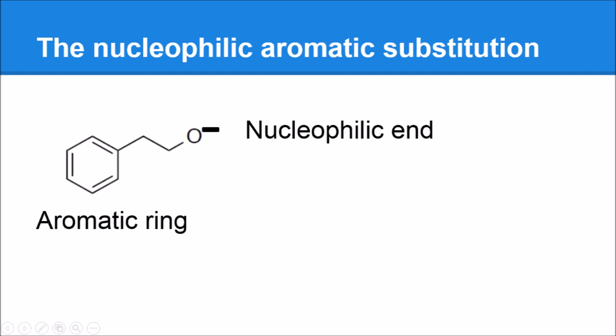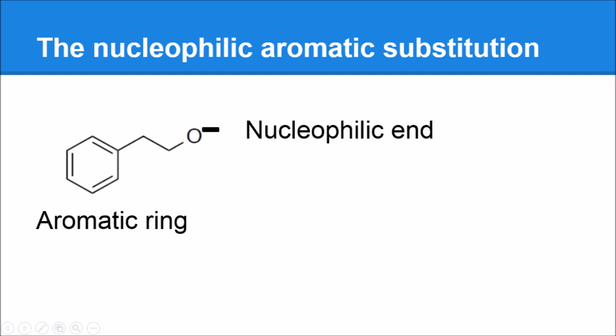At this point we have potassium K⁺ in the middle of the catalyst and a chloride ion that's just left on its own. The final step is the potassium meets the chlorine and they bond together to form potassium chloride, and our catalyst is left on its own just as it started — that's how we know it plays the role of the catalyst. And that is our entire reaction — we have formed our compound.